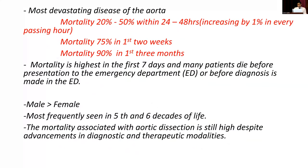Mortality from aortic dissection is 20 to 50% within the first 24 to 48 hours, increasing by approximately 1% every passing hour. By two weeks, mortality reaches about 75%, and 90% by three months. Mortality is highest in the first seven days, and many patients die before reaching the emergency department or before diagnosis is made. It is more common in males and most frequently seen in the fifth and sixth decades of life.